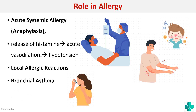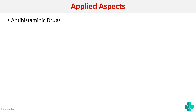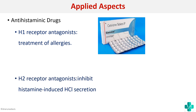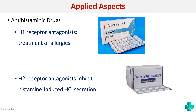For applied aspects, you can mention antihistaminic drugs: H1 receptor antagonists, for example cetirizine, can be used in the treatment of allergies; and H2 receptor antagonists such as Rantac can be used to inhibit histamine-induced HCl secretion. This completes the discussion on histamine.